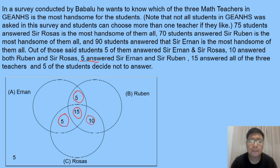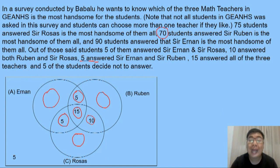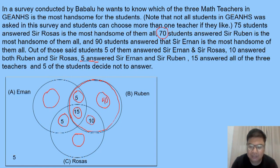The next step is to fill up the remaining values in the circles. For Sir Ruben, the total is 70. Adding the existing intersection values: 5 plus 15 is 20, plus 10 is 30. To reach 70, we still need 40. So the remaining portion of Sir Ruben's circle is 40 students.